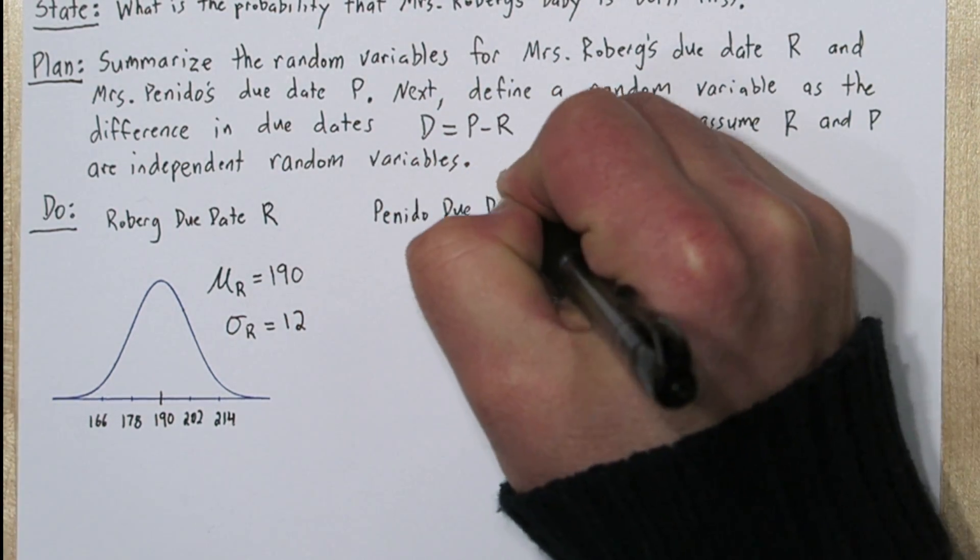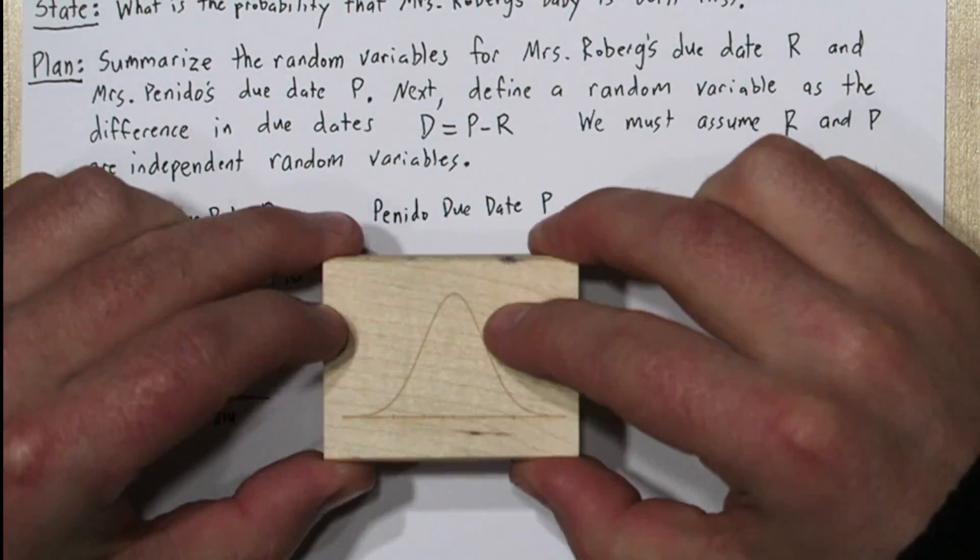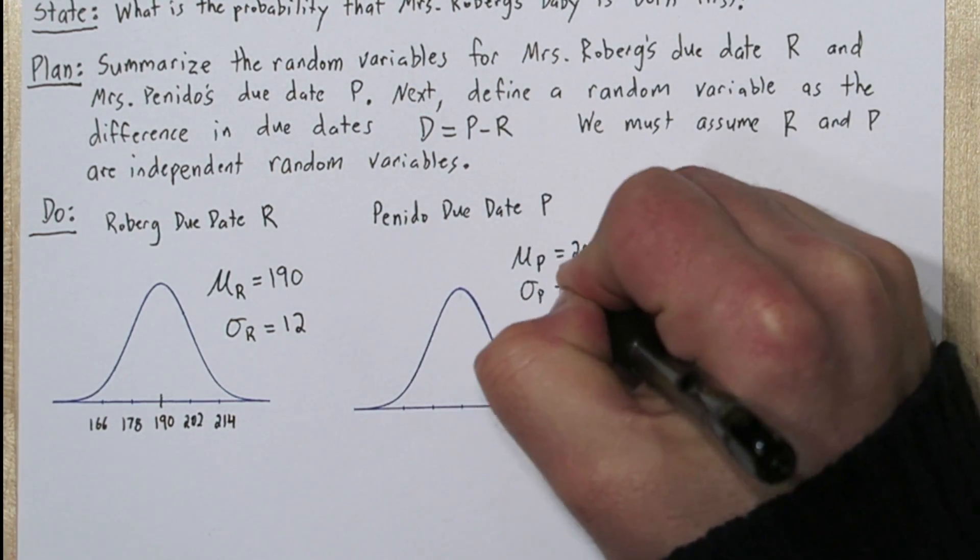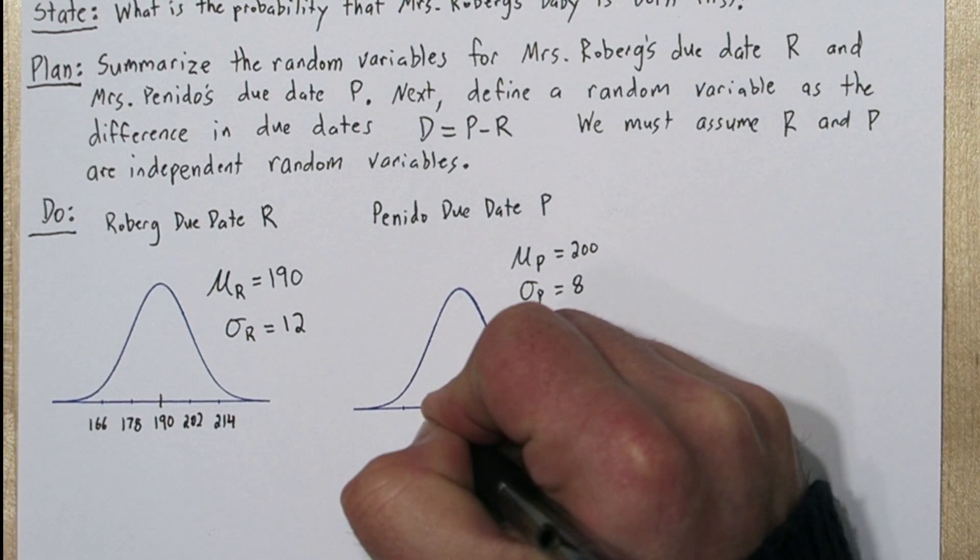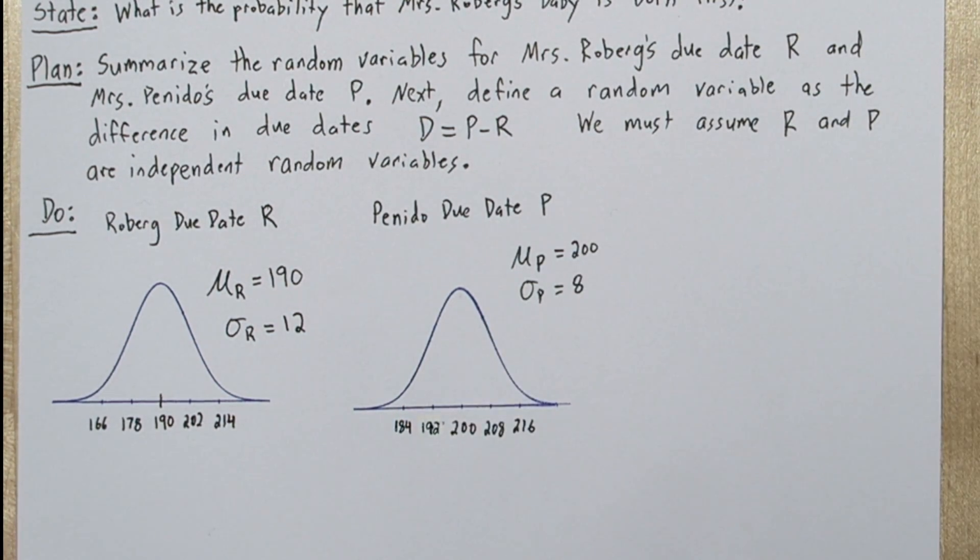The Paneto due date is also normally distributed, but its mean is 200, and its standard deviation is 8. So we'll label the axis of this distribution two standard deviations from the mean as well.